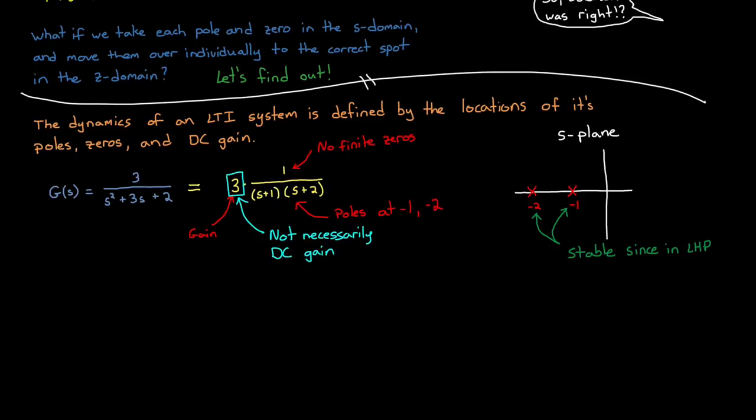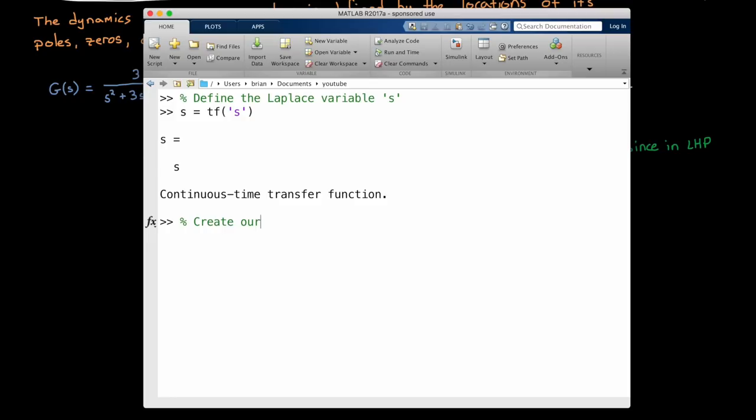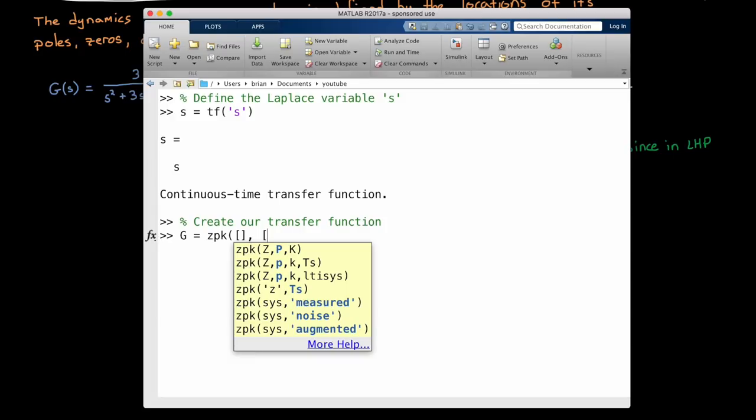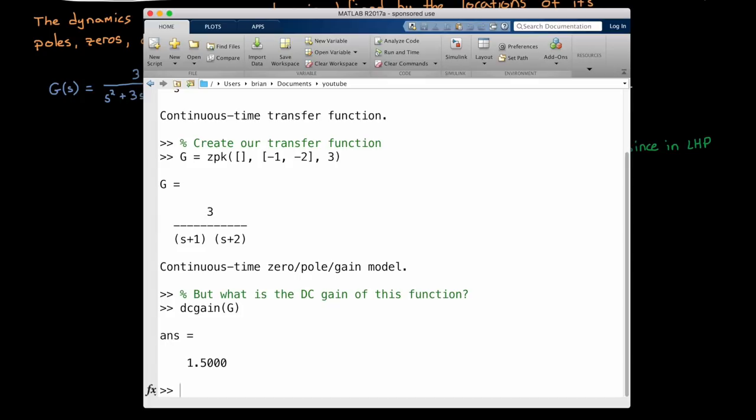Now the first thing I do is create the Laplace variable s. Now we're not actually going to use this variable, I just created it out of force of habit. We're actually going to use the zpk function to create our transfer function, and then check the DC gain of that result. And our system has no finite zero, so we can just pass in an empty matrix. We have poles at minus 1 and minus 2, and we have a gain of 3. And now we can verify that this is the exact same transfer function that I wrote down earlier, and then calculate the DC gain of this system with the DC gain function. And it claims it's 1.5, not 3 like we specified. They are clearly different.